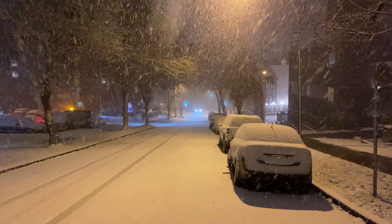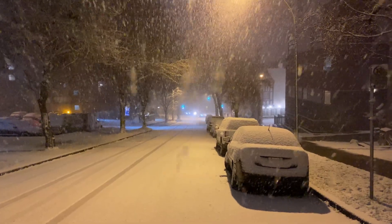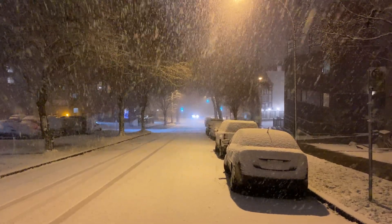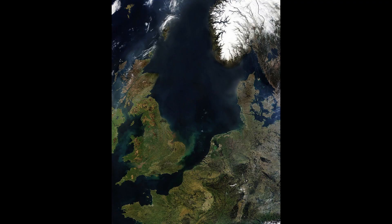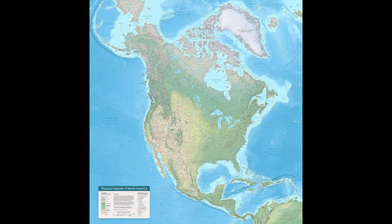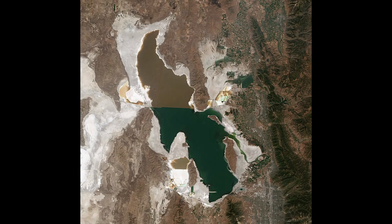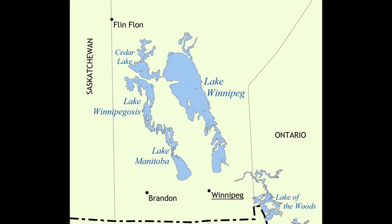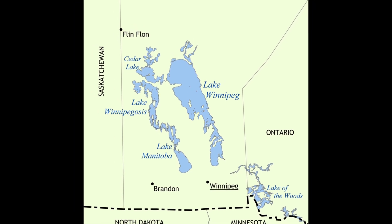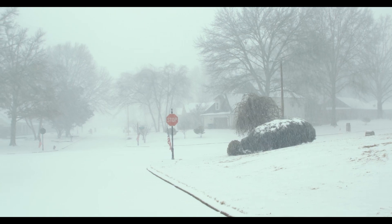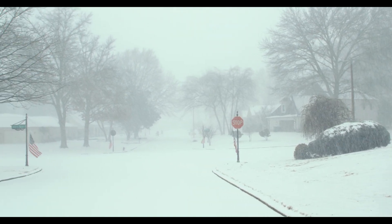This extreme difference between such small distances makes lake effect snow very hard to forecast, even for experienced and seasoned forecasters. Lake effect snow doesn't just impact the Great Lakes either. It is also often observed along the shores of the Black Sea, the Caspian Sea, the Baltic Sea, the North Sea, and even in other parts of North America, such as along the shores of the Great Salt Lake, Lake Winnipeg, Lake Manitoba, and Lake Winnipegosis up north in Canada. Lake effect snow is also often observed in varying degrees at countless other lakes and seas around the world.